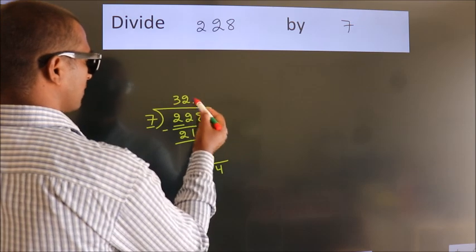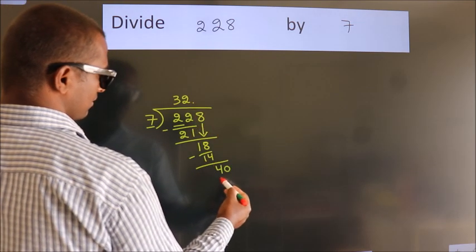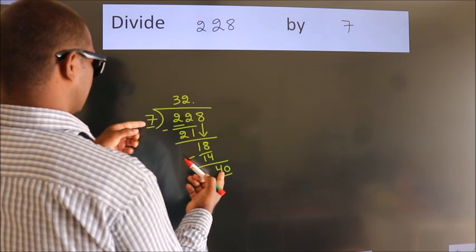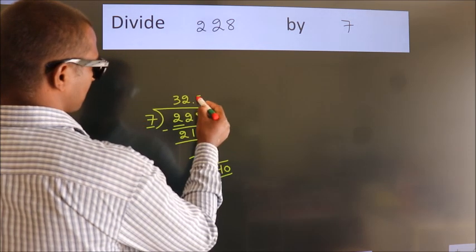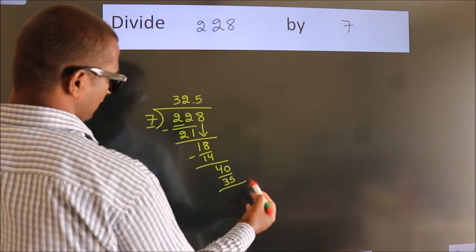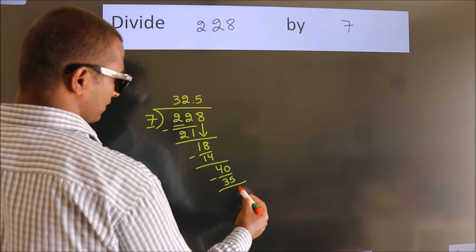So what we do is, we put dot take 0. So 40. A number close to 40 in 7 table is 7 fives, 35. Now we subtract. We get 5.